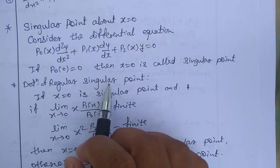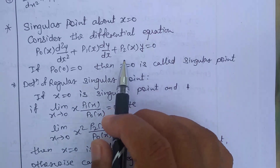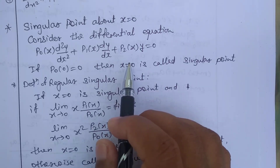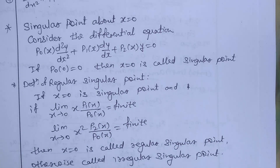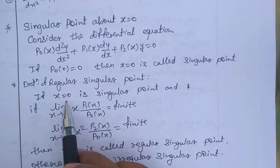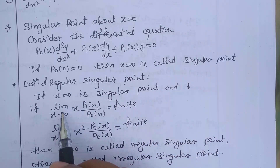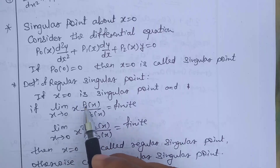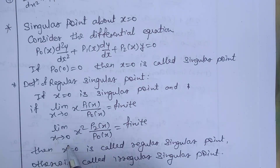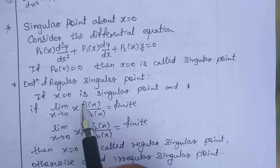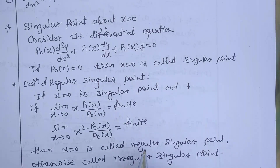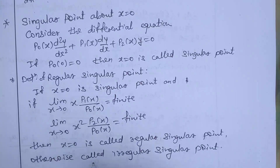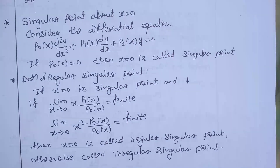Next, after identifying a singular point, there are two types: regular singular point and irregular singular point. To check whether x = 0 is regular or irregular: if x = 0 is a singular point and lim(x→0) [x · p₁(x)/p₀(x)] is finite, and also lim(x→0) [x² · p₂(x)/p₀(x)] is finite, then x = 0 is a regular singular point. If one of the conditions fails, then x = 0 is an irregular singular point.